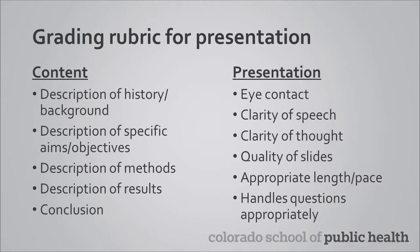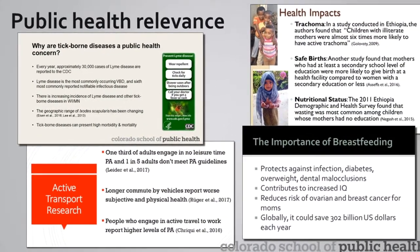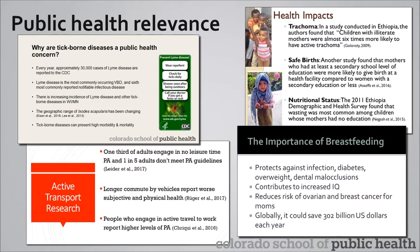Before putting your presentation together, you should review the grading rubric for this assignment in Canvas so that you understand the presentation components your faculty advisor will be looking for. One of the elements that you should address early on in your presentation is the public health relevance of your project. Don't assume that the audience understands the connection between the main topic of your capstone project and public health. This should be explicitly called out in your presentation. As you can see in the sample slides shown on the screen, there are many ways that this can be done.